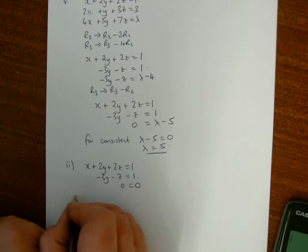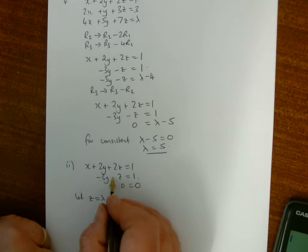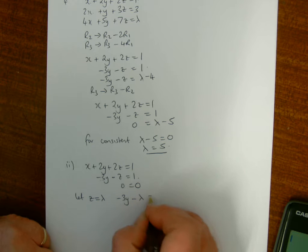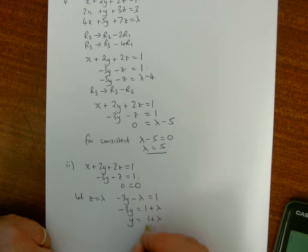So I'll let z equal 1 plus lambda. Then y is 1 plus lambda divided by minus 3, so that's minus (1 plus lambda) over 3.